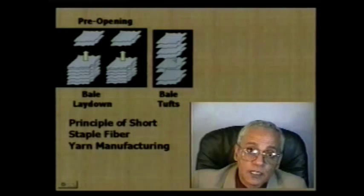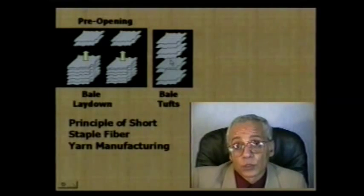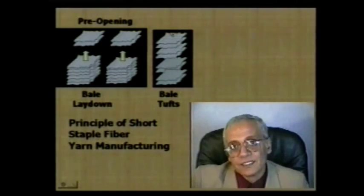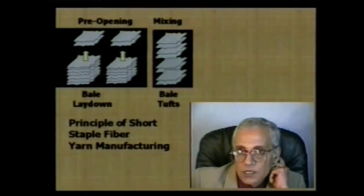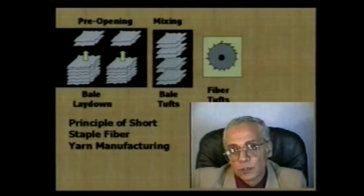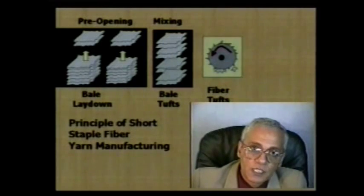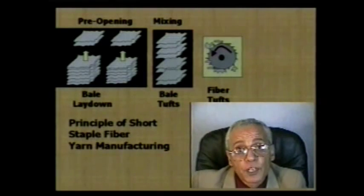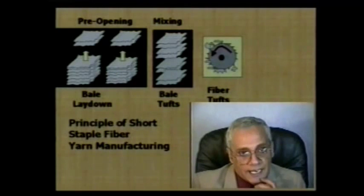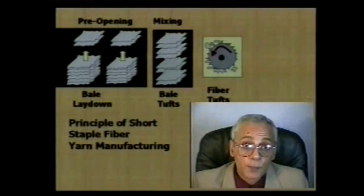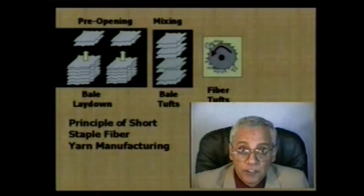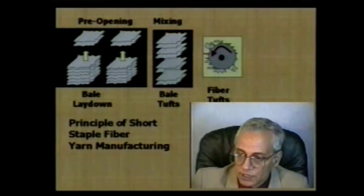After mixing, the tuft size is still large. To reduce it down to a linear fiber strand, we must open the fibers — that is, divide and re-divide the fiber tufts down to smaller sizes. This opening process must be achieved in a very gradual fashion to avoid damaging the fibers. During opening, we also clean the fibers: any opening action exposes trash particles and foreign matter, which can then be dusted off or removed through mechanical means.